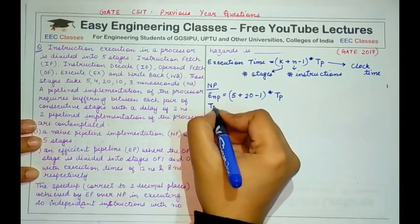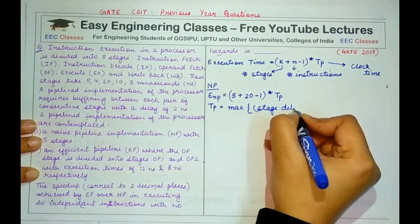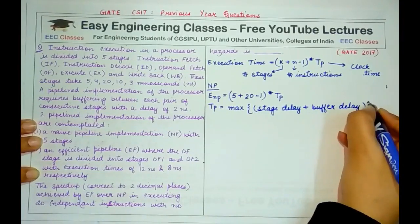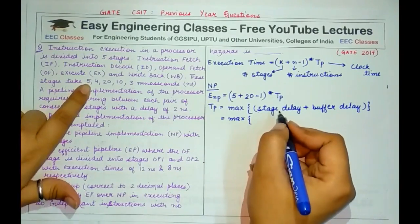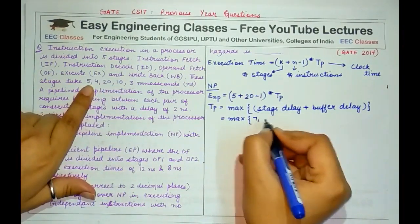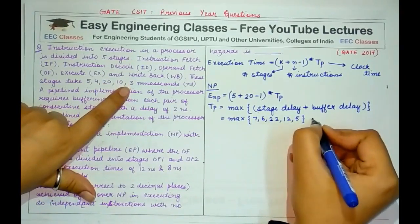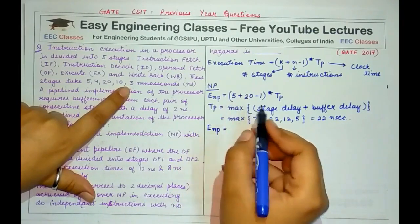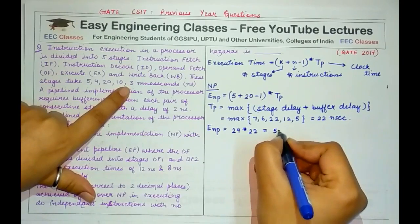TP = maximum of (stage delay + buffer delay). The values are: 5+2=7, 4+2=6, 20+2=22, 10+2=12, 3+2=5. The maximum is 22, so TP = 22 nanoseconds. ENP = (5 + 20 − 1) × 22 = 24 × 22 = 528 nanoseconds.